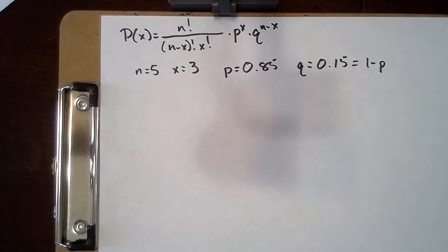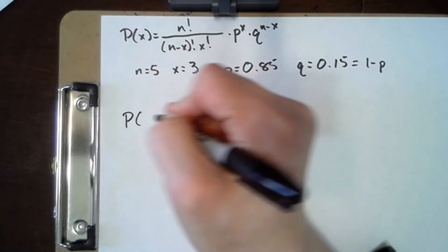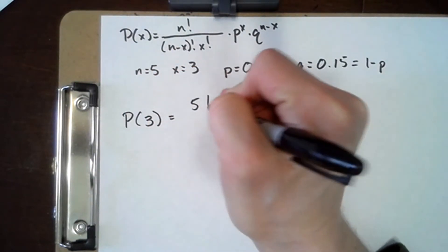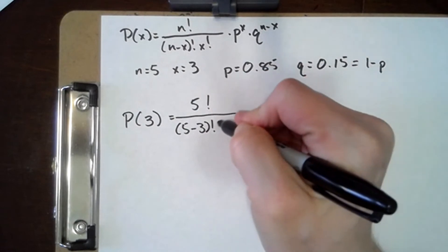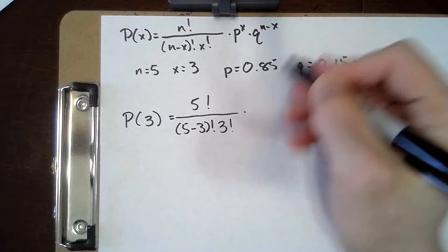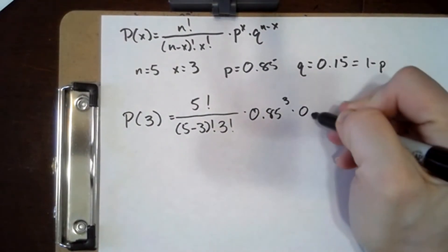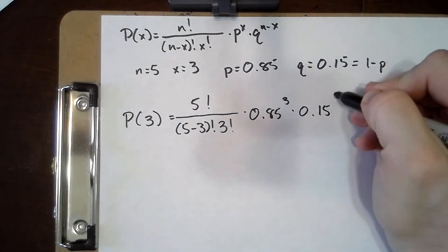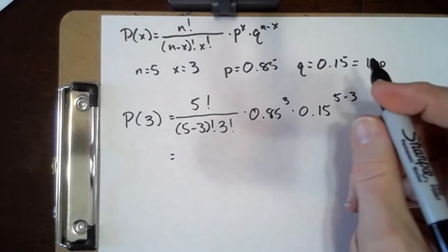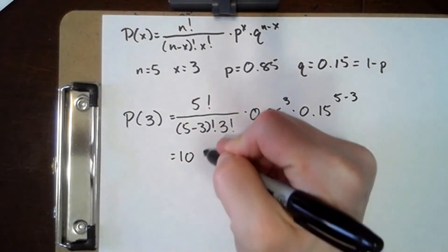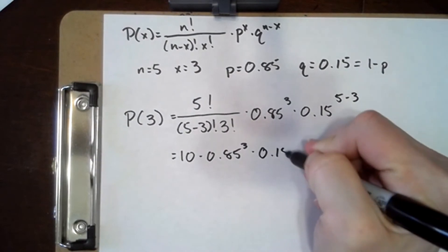And we are going to fill in this equation. We've got P of 3 is equal to 5 factorial over 5 minus 3 factorial times 3 factorial times 0.85 cubed times 0.15 to the 5 minus 3. Well, 5 factorial over 5 minus 3 factorial times 3 factorial, that's just 10 times 0.85 cubed times 0.15 squared.